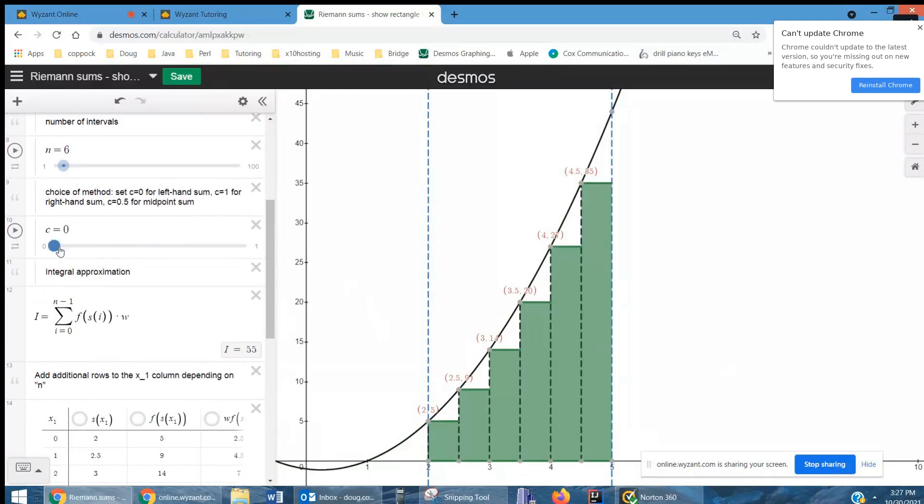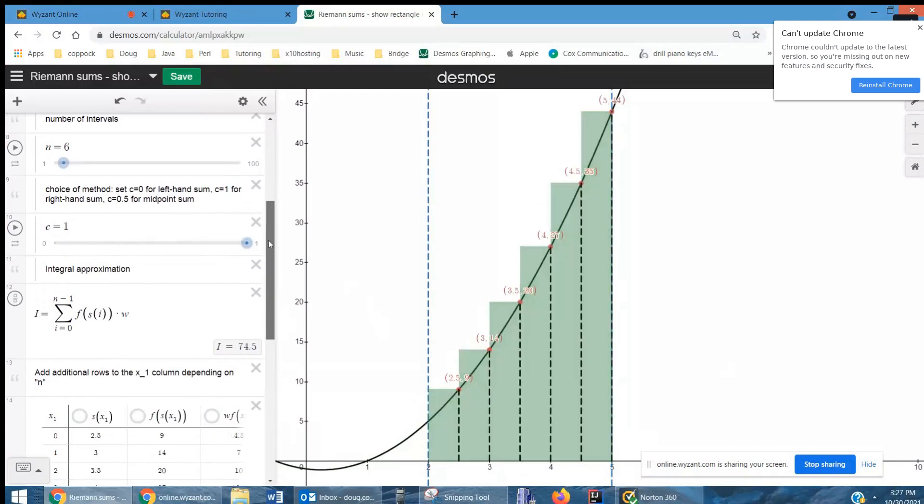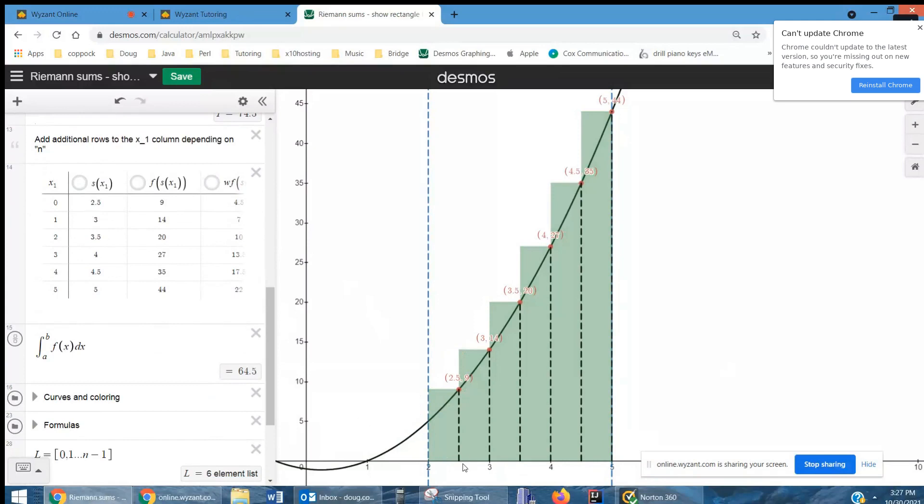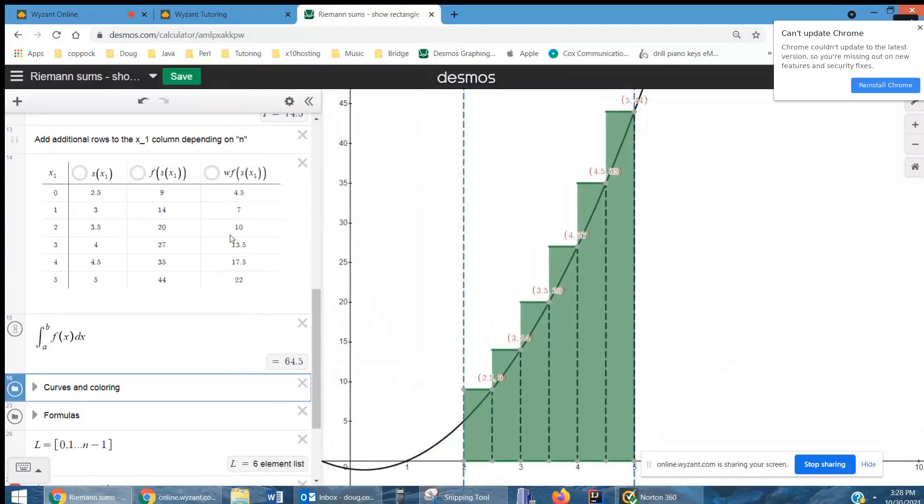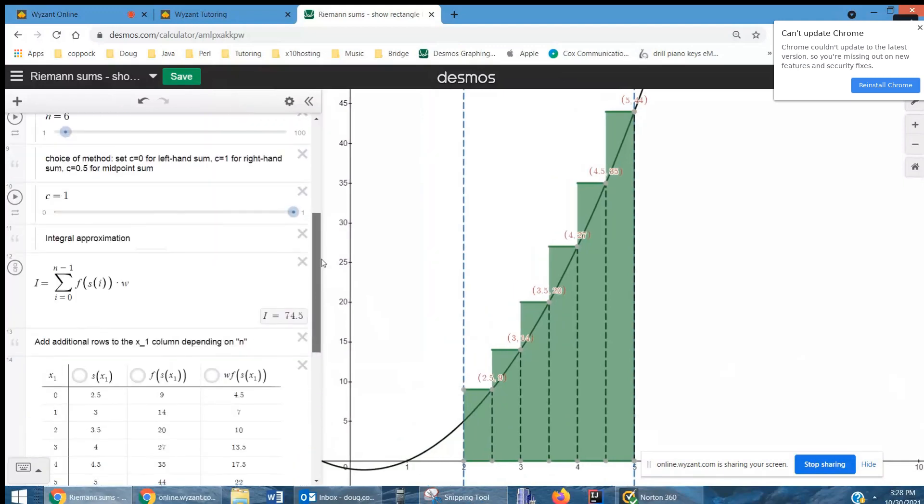If I go to right-hand endpoints, then 2.5 is the first, is the right-hand endpoint of the first rectangle. And f of s sub i is the height, which is 9, times the width will give us the area of the first rectangle. Add those all together, and you get 74.5, an overestimate of the true area.